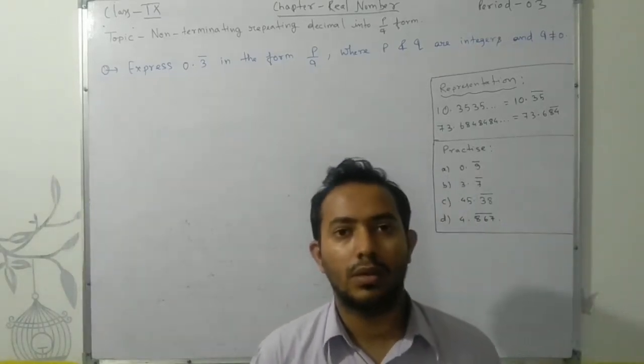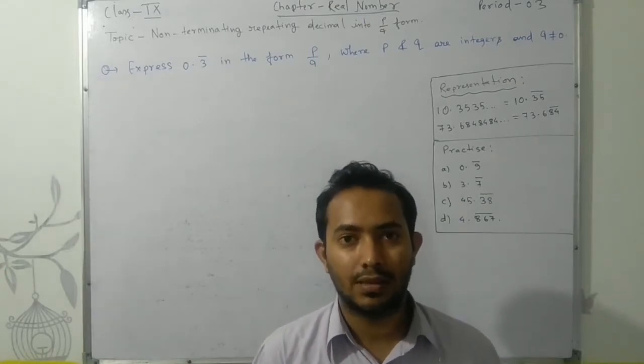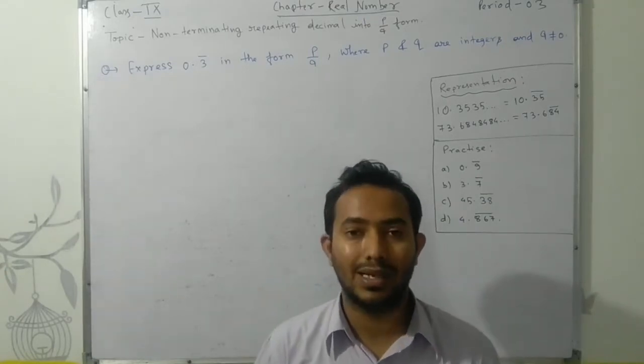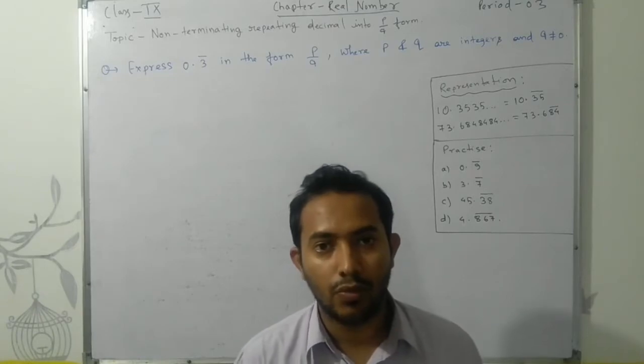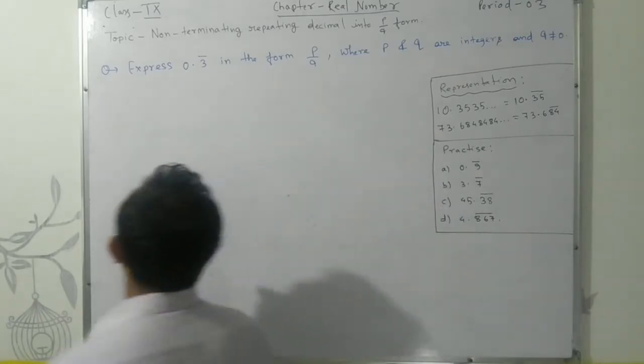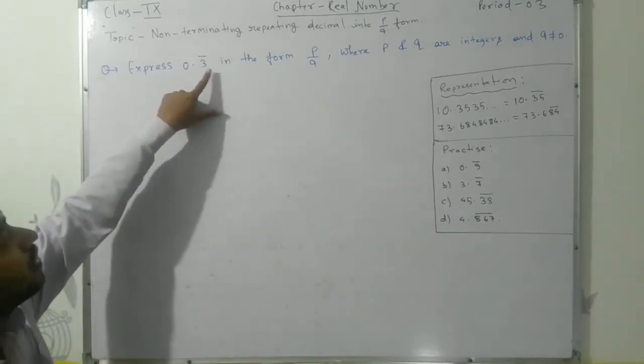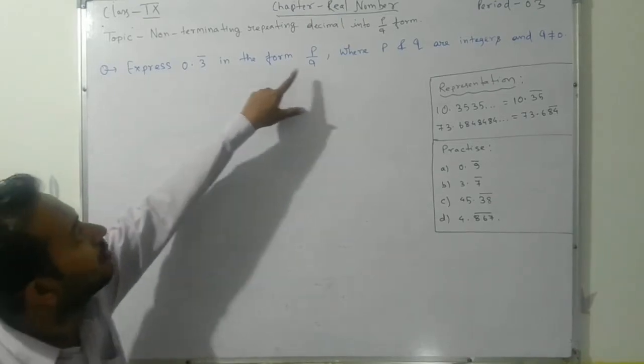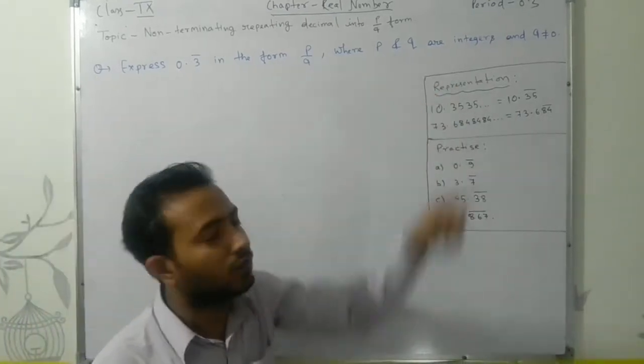Namaste students. Today we are going to learn how to convert non-terminating repeating decimals into p/q form. Here we have expressed 0.3 bar in the form p/q where p and q are integers and q is not equal to zero.